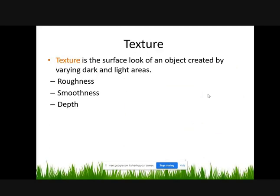Textures: texture is a surface quality of an object, created by various dark and light areas. There are roughness, smoothness, and depth. These things are used in an image to make perfect color combinations.